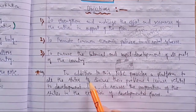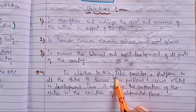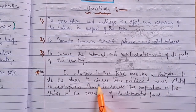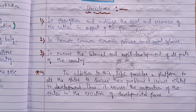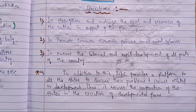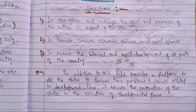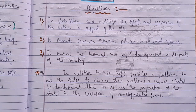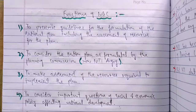Additionally, NDC provides a platform where all states can meet and discuss their problems and issues related to development. Whether there are any discriminations or inequalities between states, NDC was the platform where they could meet and discuss problems relating to development and Five-Year Plans. Thus NDC secures the cooperation of states in the execution of development plans. The cooperation of all states is very important for proper execution of development plans and for achieving rapid and balanced development across all parts of the country.